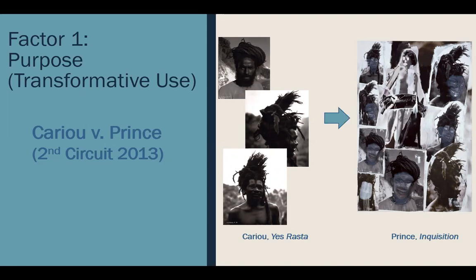The last factor is market effect. When courts consider market effect in fair use, they're looking at whether the secondary use serves as a market substitute for the original work — does it usurp the original? In this case, the court said no. Because the works were so transformative, the audience for the two works were two different audiences — two different markets — so there was no market substitution occurring. Overall, the court balanced all factors together and determined this is a fair use.